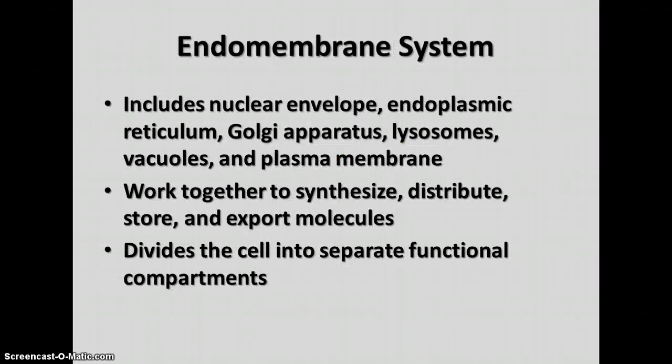The endomembrane system is one of the major parts of the interior of the cell. This includes not only the nuclear envelope, but the endoplasmic reticulum, the Golgi apparatus, lysosomes, vacuoles, and the plasma membrane. All of these things are involved in the endomembrane system. These organelles work together to make, distribute, store, and export the molecules needed by the cell. The system divides the cell into separate functional compartments.